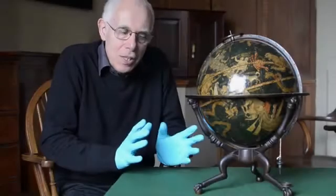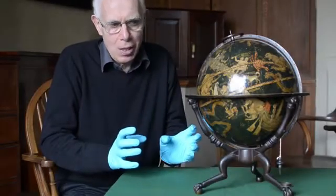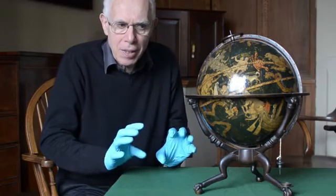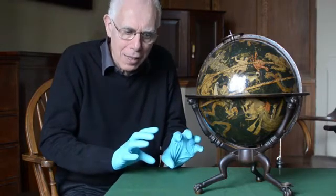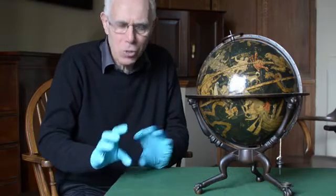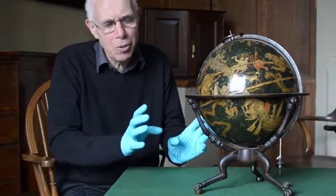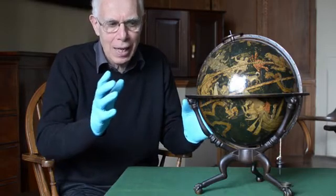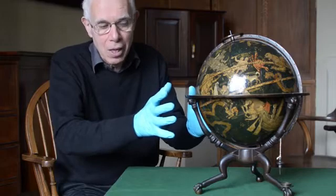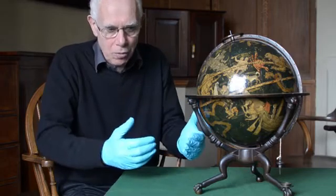Schoener is important in two ways, in two very closely related disciplines that were called at the time cosmography and cosmology. So what's cosmography first of all? Well, cosmography is the relationship between the heavens and the earth and the representation through things like globes. Schoener was a cosmographer.